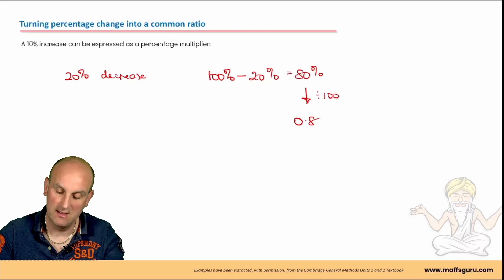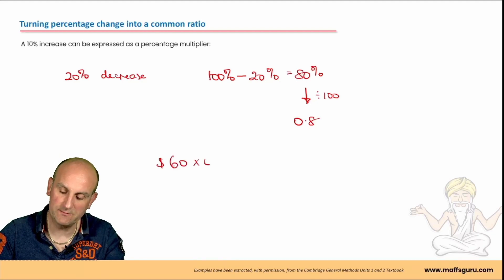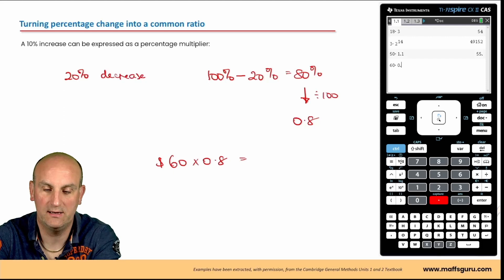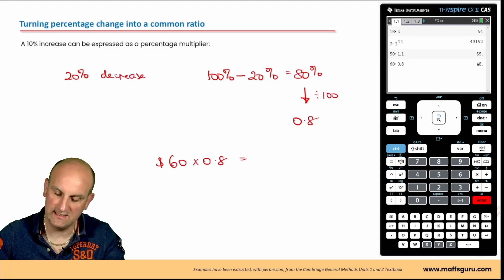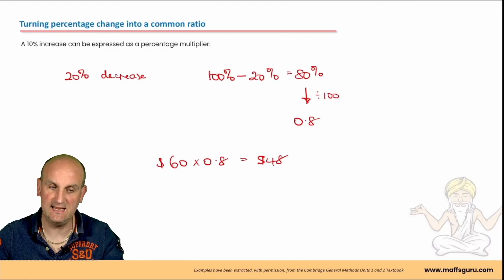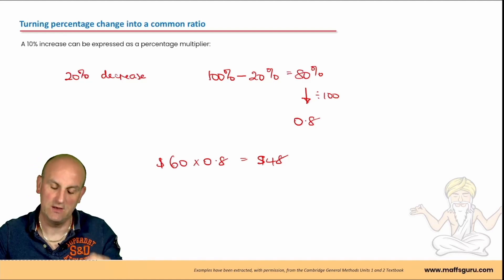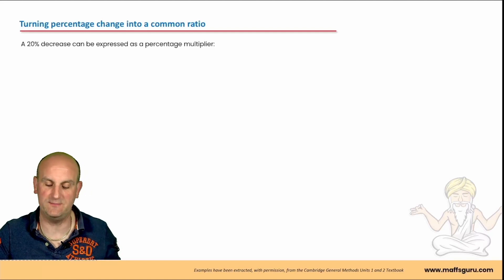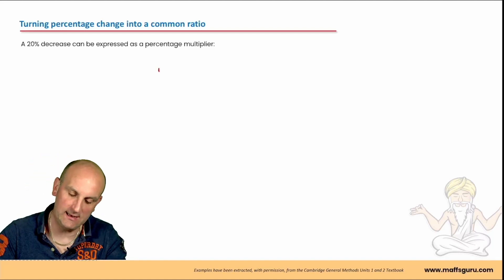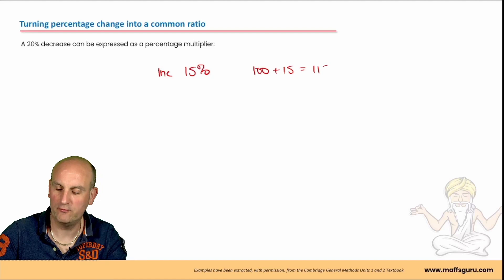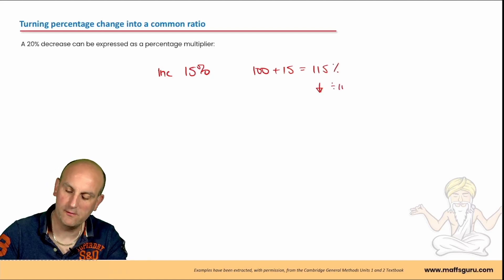So if I want to reduce something by 20%, let's say $60. If I multiply that by 0.8, bring up my calculator, 60 times 0.8 gives me $48. Now, what that means is that 80% of the 60 is $48, or I've reduced it by $12. This makes life so much easier. I've done a 20% decrease. Let's do another one. Let's do an increase of 15%. We've got 100 plus the 15 is 115%. Divide that by 100 gives me a multiplier of 1.15. Now, these multipliers, believe it or not, are just common ratios.